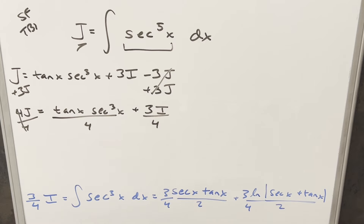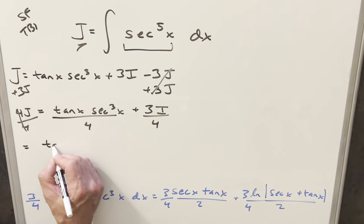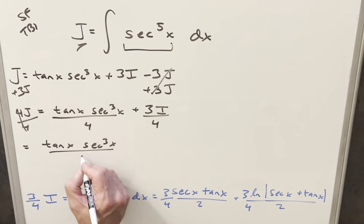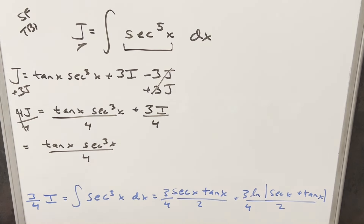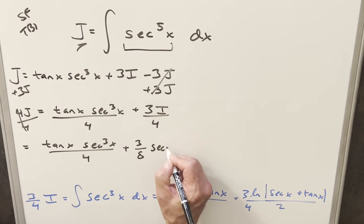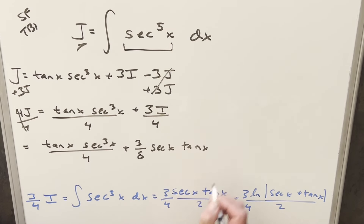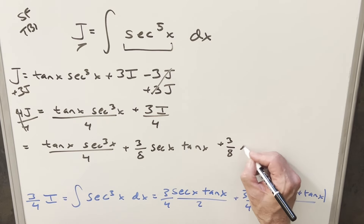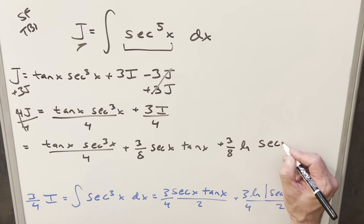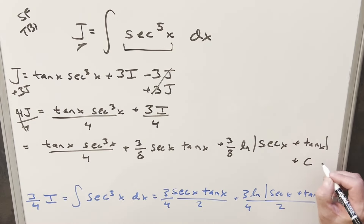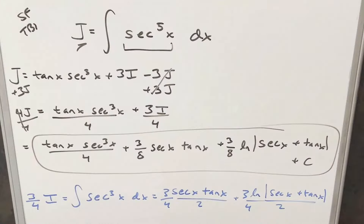Putting together the final solution: tan x · sec³x over four, plus three eighths secant x times tan x, plus three eighths natural log |sec x + tan x|, plus C. It's a pretty long solution, but there you have it — the integral of secant to the fifth. Thanks everyone for watching, have a good day.